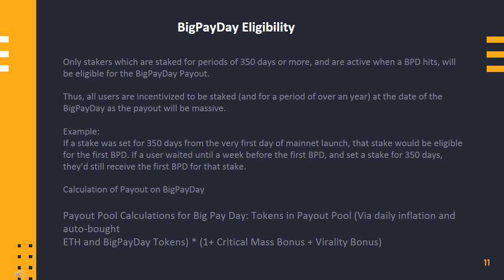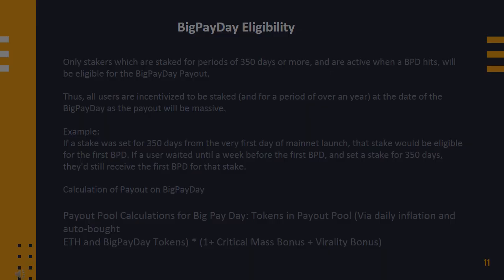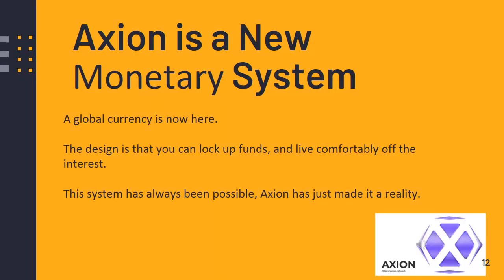Calculation of payout on Big Payday: Payout pool calculations for Big Payday include tokens in the payout pool via daily inflation and auto-bought ETH, and Big Payday tokens multiplied by (1 + critical mass bonus + virality bonus). Axion is a new monetary system — a global currency is now here. The design is that you can lock up funds and live comfortably off the interest. This system has always been possible; Axion has just made it a reality.